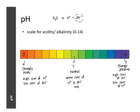At pH 7, a solution is neutral — neither acidic nor alkaline — meaning it contains the same concentration of hydrogen and hydroxide ions. Water is an example of a neutral substance. As a rough guide, strong acids are typically found at pH 0 to 2, weak acids at pH 3 to 4, strong alkalis at pH 13 to 14, and weak alkalis around pH 9 to 10.